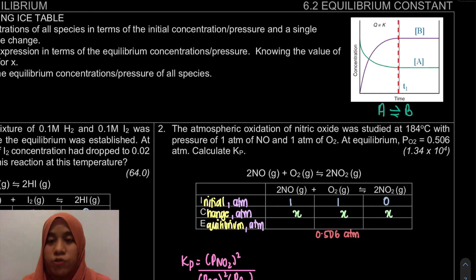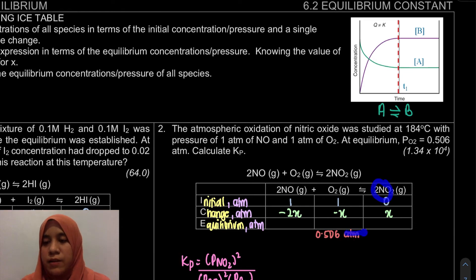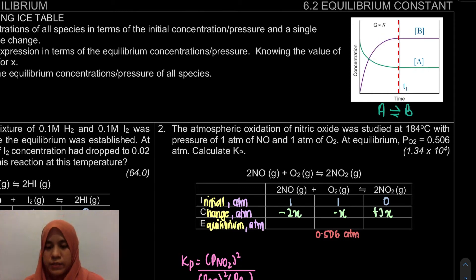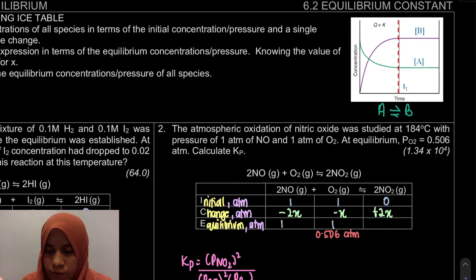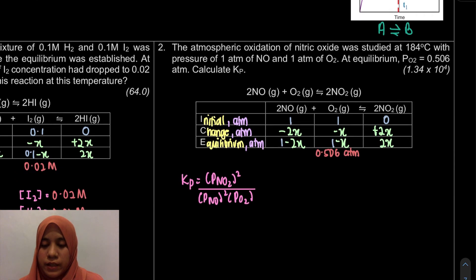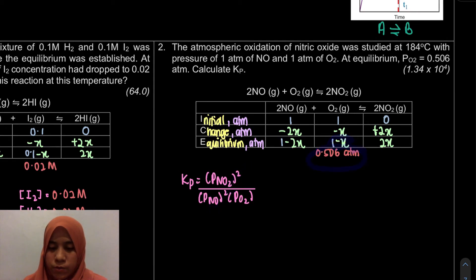For the Change row, we use the unknown X. The reactant NO has a stoichiometric coefficient of 2, so its change is minus 2X. For O2 the change is minus X. For the product NO2, as time proceeds the pressure increases, so the change is plus 2X. For the Equilibrium row, combining: NO = 1 minus 2X, O2 = 1 minus X, NO2 = 2X. From the given information, 1 minus X = 0.506 atm, so X = 0.494.